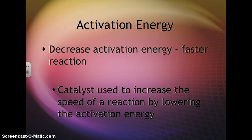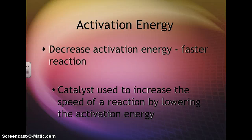Going back to activation energy — that's the energy needed for a chemical reaction to take place. If we decrease the activation energy, we make it easier for a reaction to occur, so it's going to happen more quickly. Catalysts are used to increase the speed of a reaction by actually lowering the activation energy, so lowering the amount of energy needed to start and carry out that reaction.